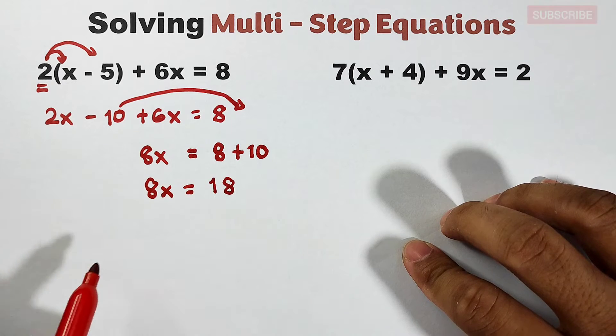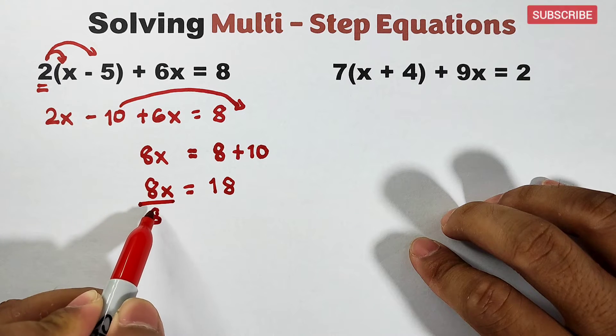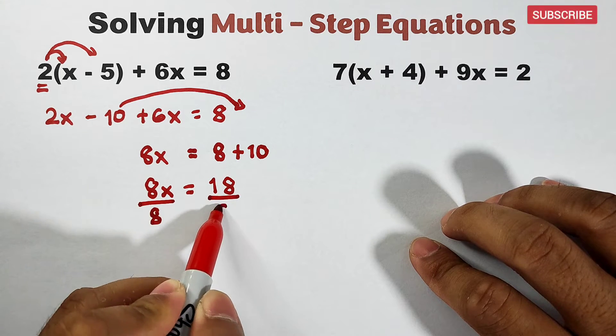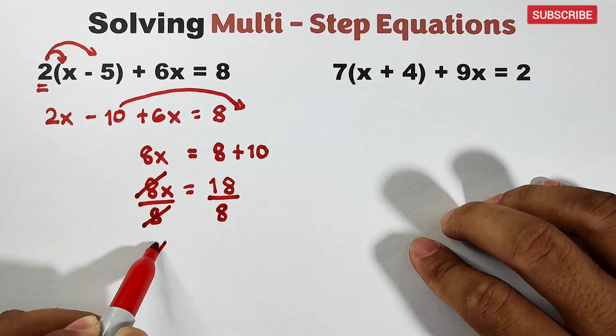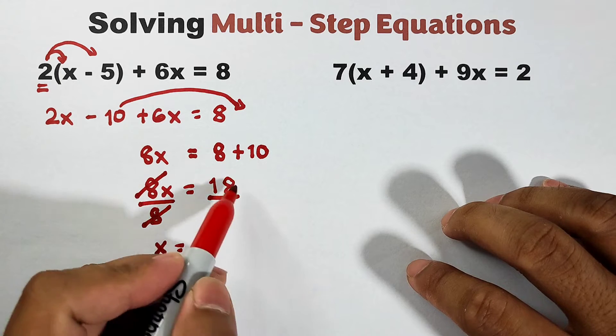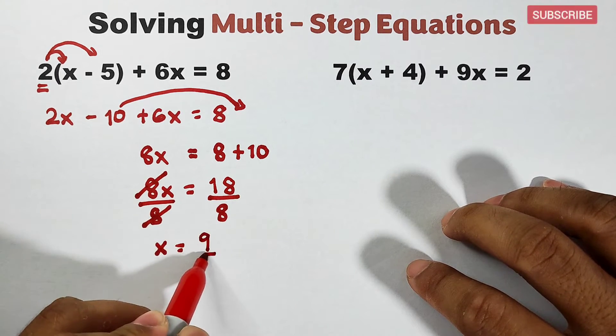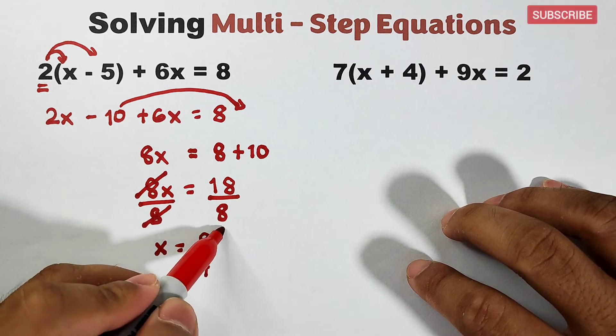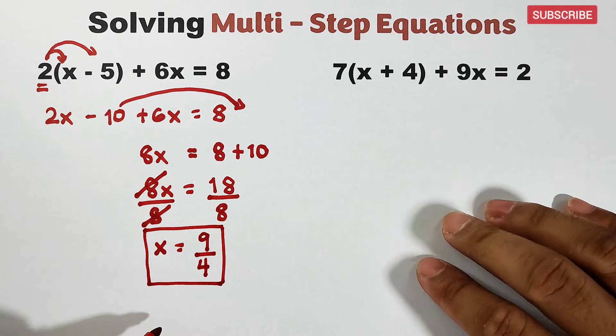To finally solve for the variable x, we need to divide both sides of the equation by 8. These cancel out. Your x is 18 over 8, which we can express in lowest terms. So the lowest term is 9/4, and this is now the value of x in item number 1.